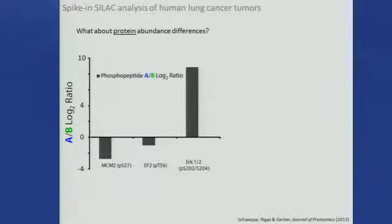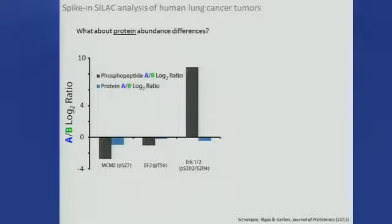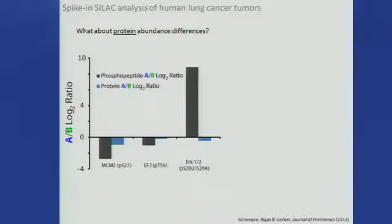There is more dynamic information in phosphoproteomes than in the proteome itself. These phosphopeptide ratios for several proteins between the two tumors show that the corresponding proteins didn't change much at all — in some cases, one site was actually increased in one tumor whereas the protein was slightly decreased in that same tumor.